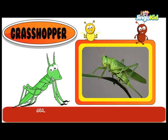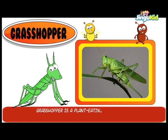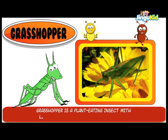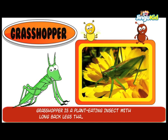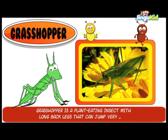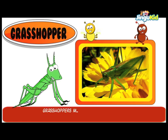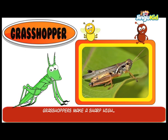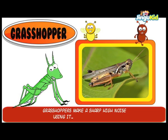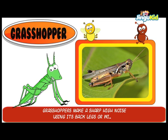Grasshopper is a plant-eating insect with long back legs that can jump very high. Grasshoppers make a sharp, high noise using their back legs or wings.